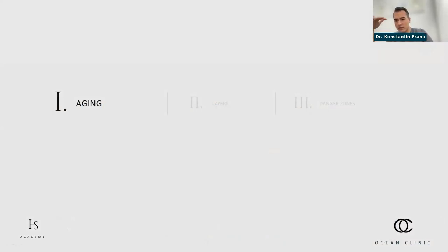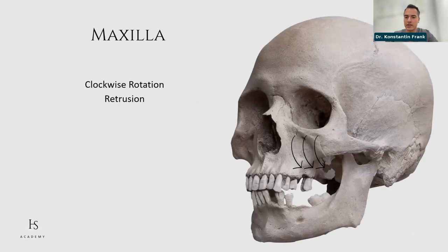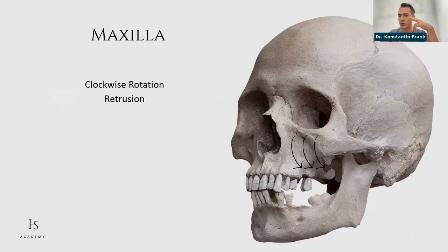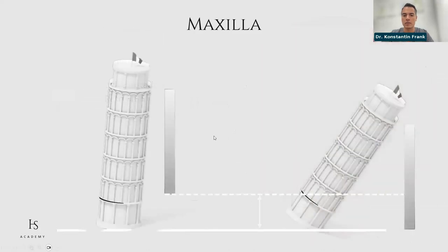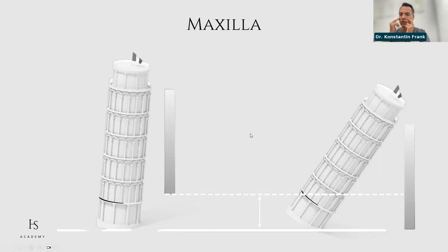In the midface we see a clockwise rotation of the maxilla — at least when viewed from the right side. The maxilla turns anteriorly in its cranial part and posteriorly in its caudal part. All the soft tissue layers attached to the bone by ligaments — the orbicularis retaining ligament and zygomaticocutaneous ligament — start to fall down like a flag attached to the Leaning Tower of Pisa. So while there is soft tissue descent in the midface, the actual problem to a large extent is the rotation of the maxilla.